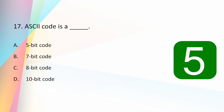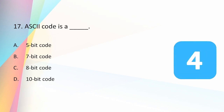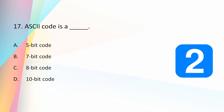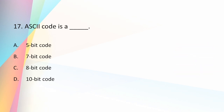ASCII code is a: 5-bit code, 7-bit code, 8-bit code, or 10-bit code? The answer is 7-bit code. ASCII stands for American Standard Code for Information Interchange. It is a 7-bit code for the English alphabet and it has 128 characters.